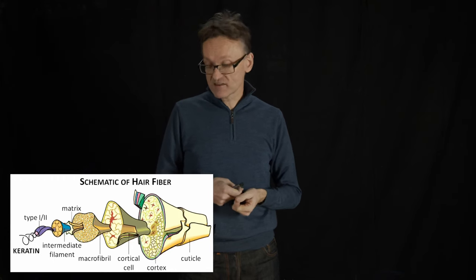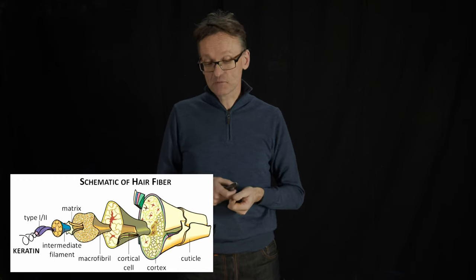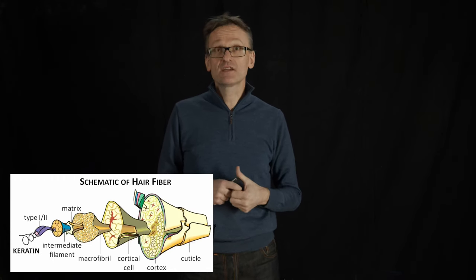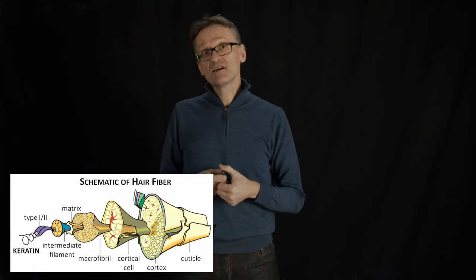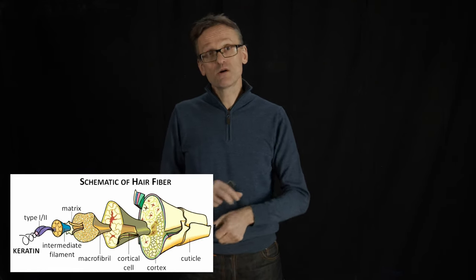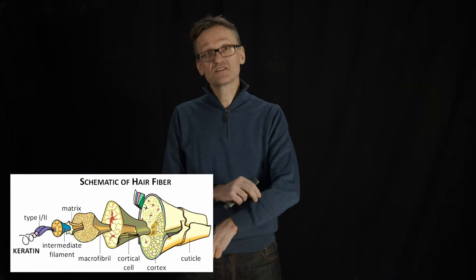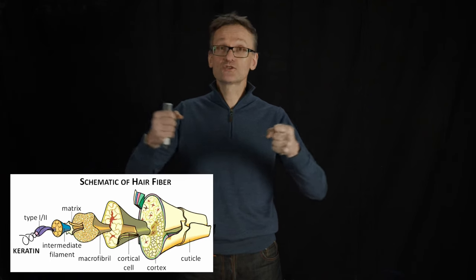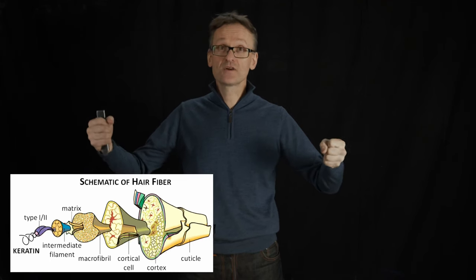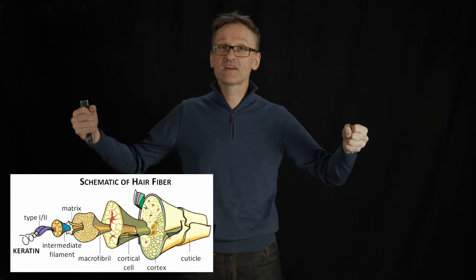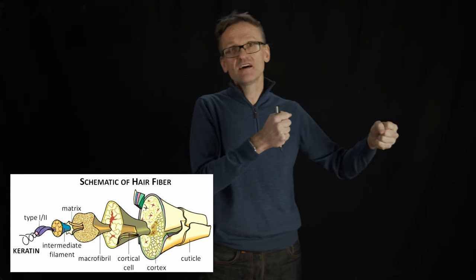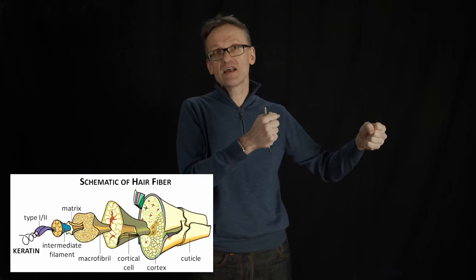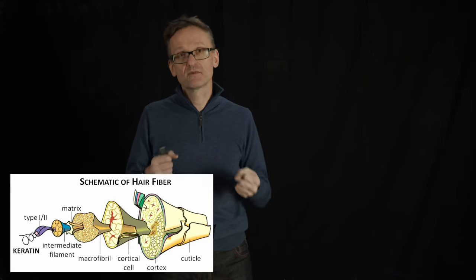And based on that, he said he was going to call this alpha keratin. He assumed that it's some sort of helix. And then he guessed that the reason why wool in particular can be stretched a bit is that if you're stretching it, this helix is going to act like a spring — you can distort it — and then it's going to be a beta keratin helix. And when you relax it again, it's going to go back to the alpha form.